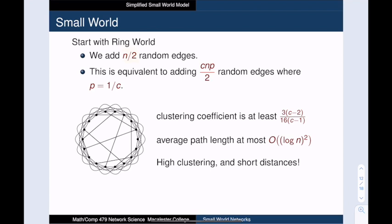Next, we add our random edges. We will decide to add n over 2 random edges. This is analogous to taking p is equal to 1 over c in the Watts-Strogatz model. Adding these n over 2 shortcut edges reduces our clustering coefficient from about 3 quarters to 3 times c minus 2 over 16 times c minus 1. This is at least 1 eighth when c is greater than or equal to 4, and is closer to 3 sixteenths when c is much larger. This is still relatively high. A constant fraction of our connected triples are indeed in triangles.